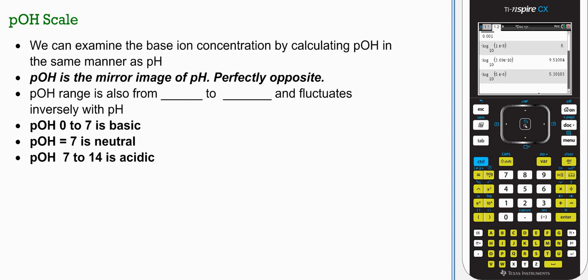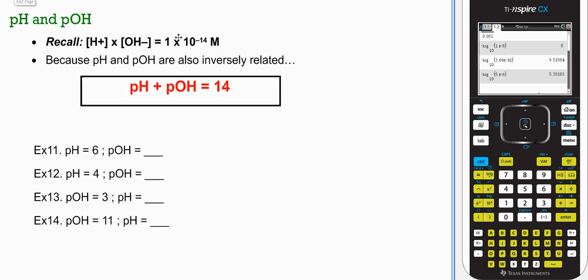The pOH scale is the yang to the yin of pH. Keep in mind, 0 to 14 is your range. If your pH is 9, your pOH must be 5. Your pOH also ranges from 0 to 14. It varies inversely with pH. A pOH 0 to 7 is basic. 7 is still neutral. 7 to 14 would be acidic. pH plus pOH always equals 14 at 25 degrees Celsius. It's a function of that ion product constant for water. If pH is 6, 14 minus 6 is 8. If pOH is 3, then pH would be 11.